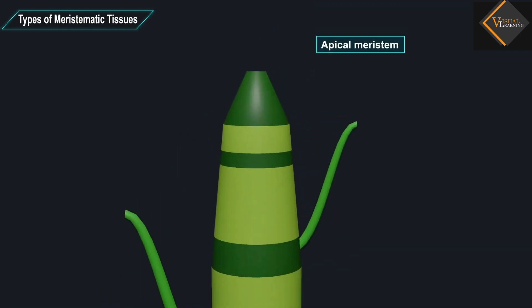Apical meristem is present at the growing tips of stems and roots and increases the length of the stem and the root.